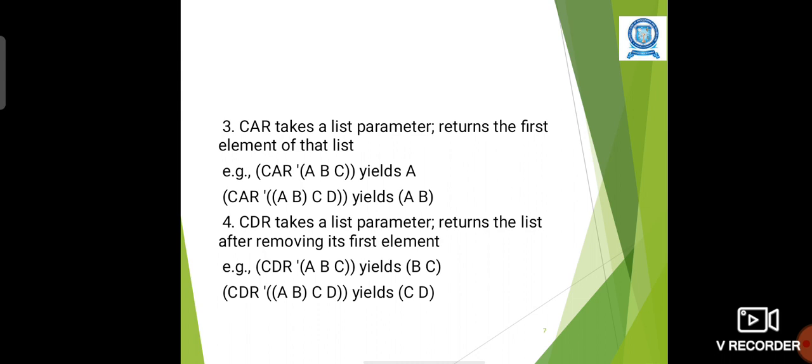CAR of apostrophe ((A B) C D) where A B is inside another bracket yields (A B). So here A B is the sublist of the list, so CAR will return the sublist, the first sublist.